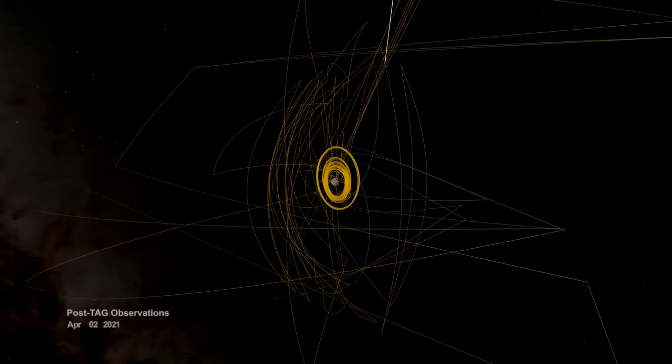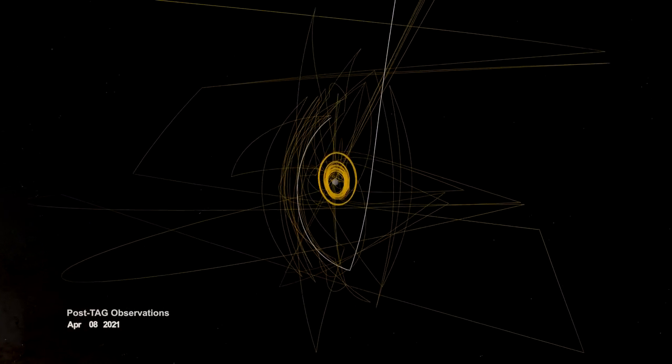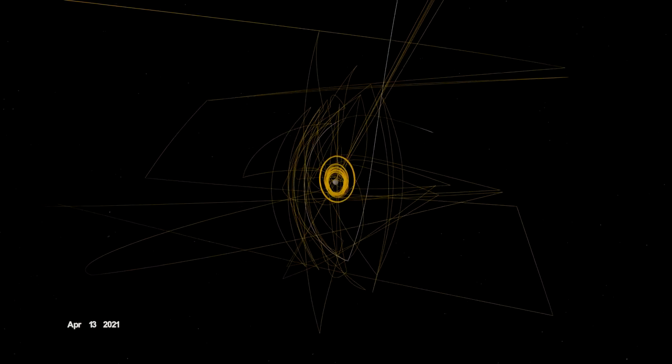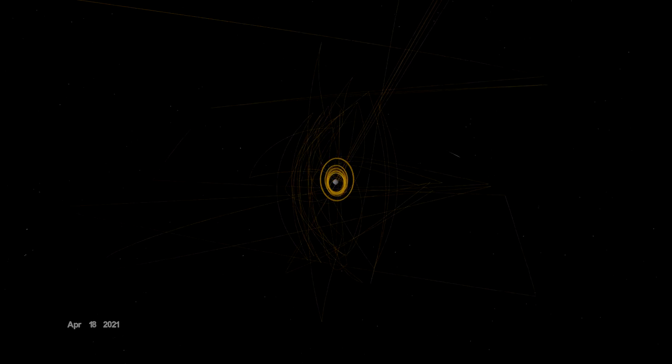Before departing Bennu, OSIRIS-REx was given one final task. On April 7th, it flew over Site Nightingale to observe how the sample collection event had changed the surface. And with that, OSIRIS-REx had recorded its mark on Bennu and spun the last strand of its web.